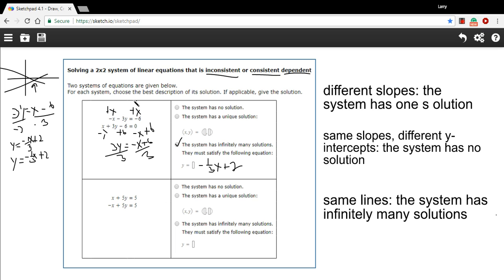So that's an example of a dependent system. If you were to solve these for y and the slopes were the same, but the y-intercepts were different, that would mean you have two parallel lines that never cross. That would be an inconsistent system.